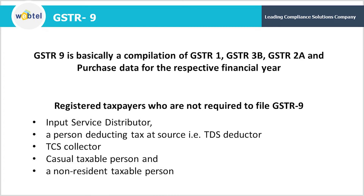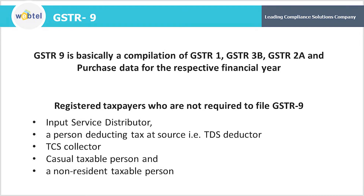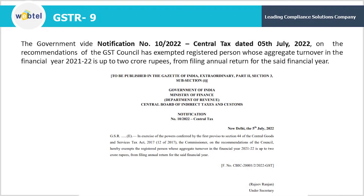GSTR9 is basically a compilation of GSTR1, GSTR3B, GSTR2A, and purchase data, and it is required to be filed by registered taxpayers except the following: input service distributor, a person deducting tax at source i.e. TDS deductor, TCS collector, casual taxable person, and a non-resident taxable person. So except all these five, all registered taxpayers are required to file their GSTR9.